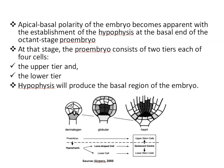The adjacent hypophysis will produce the basal region of the embryo, from which the quiescent center of the root meristem and the lower tiers of stem cells will originate. As with the daughter cells of the zygote, the three embryo regions are distinct in terms of cell division, gene expression, and cell fate. So the hypophysis will produce the basal region of the embryo.